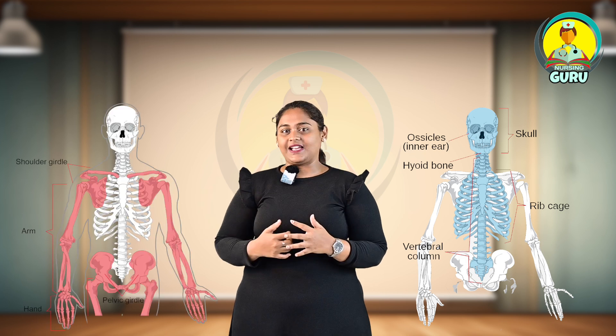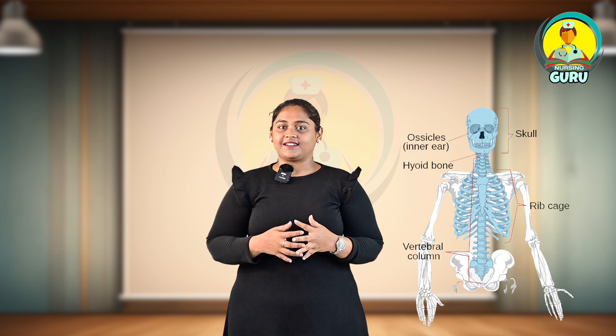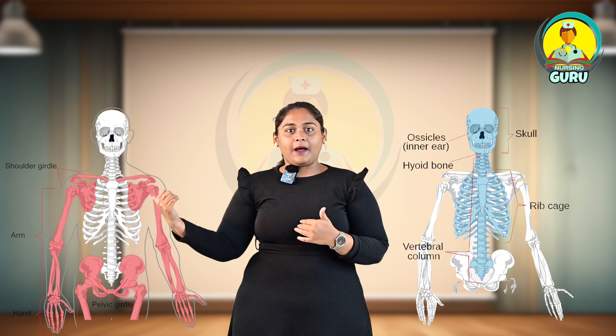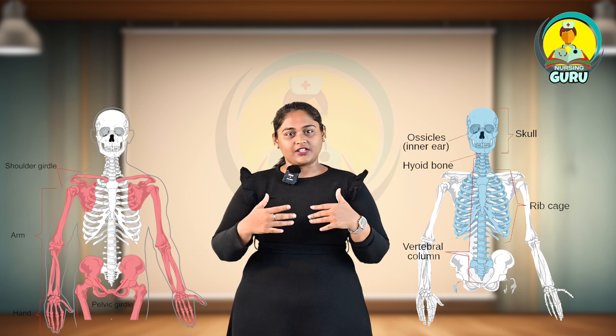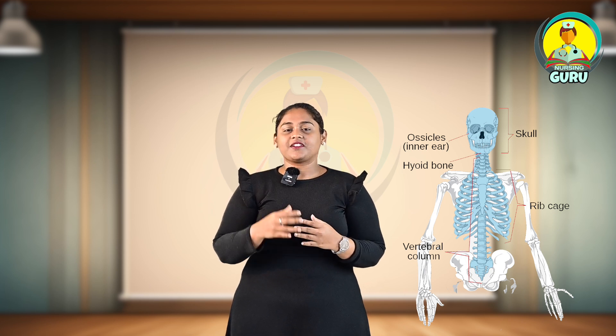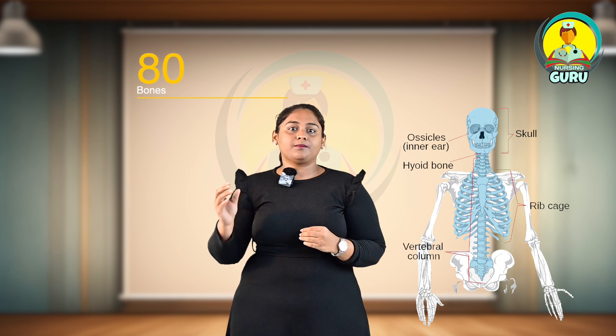The classification of bones: the skeletal system is classified into two major parts — axial skeleton and appendicular skeleton. The axial skeleton consists of bones placed along the central axis of the body, while the appendicular or peripheral skeleton consists of bones placed away from the central axis. The axial skeleton includes 80 bones in total.